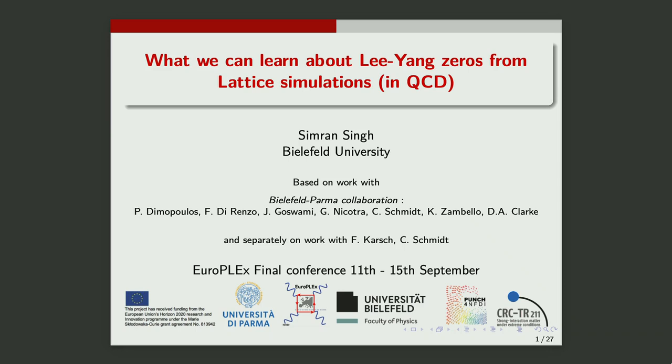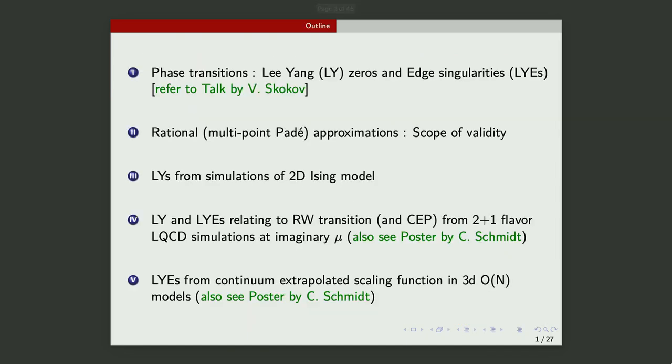Thanks to all the previous speakers, I don't have to introduce so much about Lee-Yang zeros, but my goal here is to tell you what we can extract on the lattice about these continuum things like Lee-Yang edge singularities and zeros. So the plan of the talk is to briefly introduce what I need about Lee-Yang zeros and the method that I use to probe them, and then some examples of success where the combination of probing Lee-Yang zeros by rational approximation leads to evidence of understanding phase transitions.